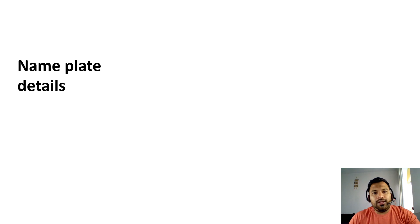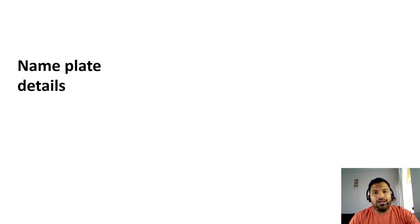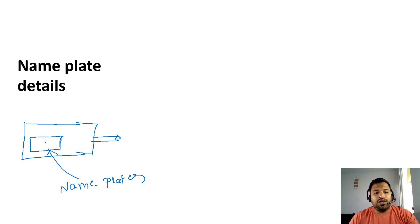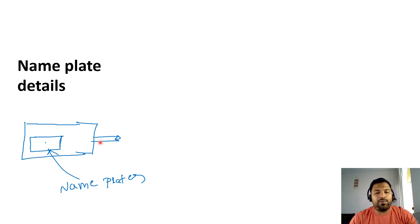Nameplate details are important for electrical equipment — in fact, for every piece of equipment. We have to know at what temperature, what voltage, and what current it will be operated. Those details are required. For example, if it is a motor, the nameplate details are mentioned on it. From the nameplate details we can learn what type of motor it is, what voltage it requires, what type of current is required, and what type of starting method is required. Those details will be learned from the nameplate details.